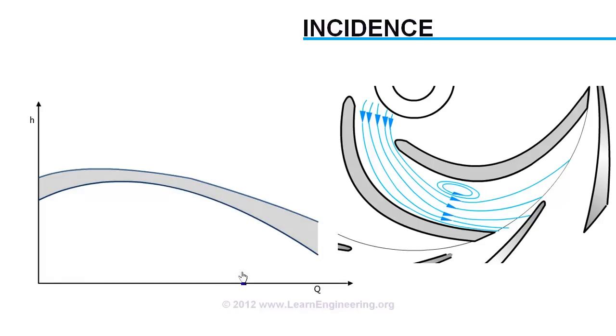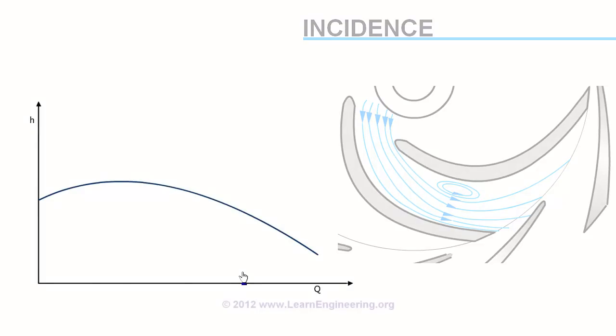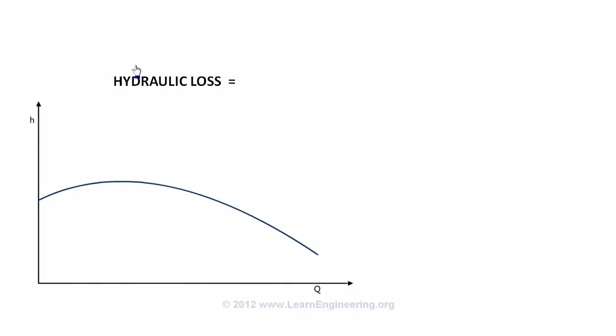Energy loss as we have discussed so far, which reduces head of the flow, is known as hydraulic loss. So, this will be the effect on the head versus flow rate curve. The shape could be anything like this, depending upon pump parameters.